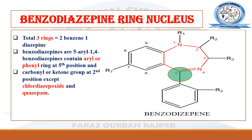At the second position, most benzodiazepines contain a ketone group, i.e., a carbonyl group. This carbonyl group is absent in chlordiazepoxide and quazepam. In quazepam, a sulfur group is present at the second position instead, while chlordiazepoxide contains a methylamine group at the second position.